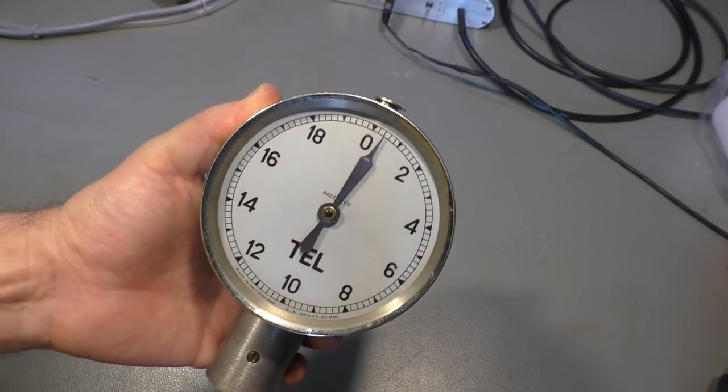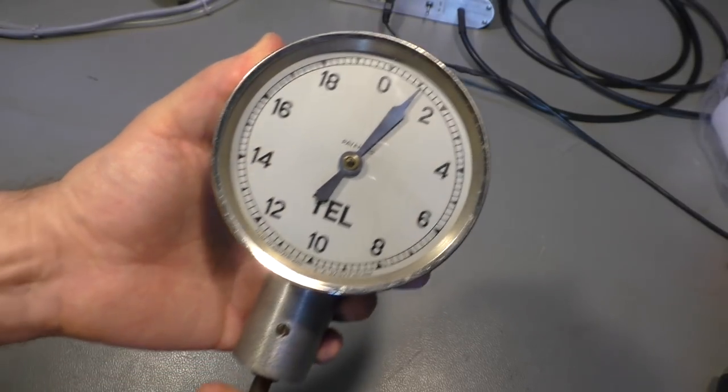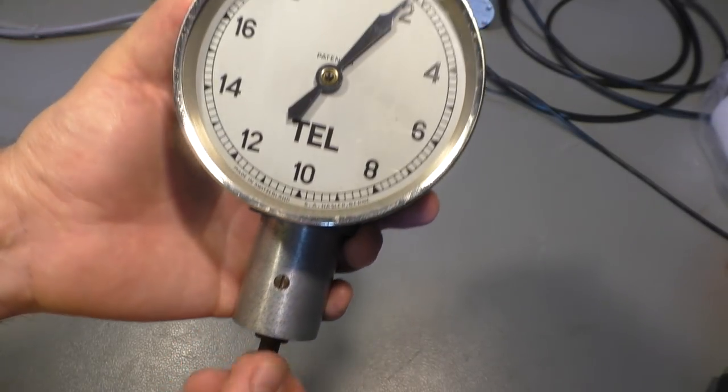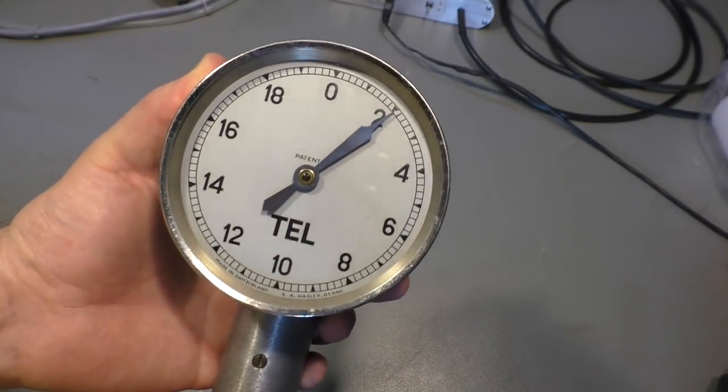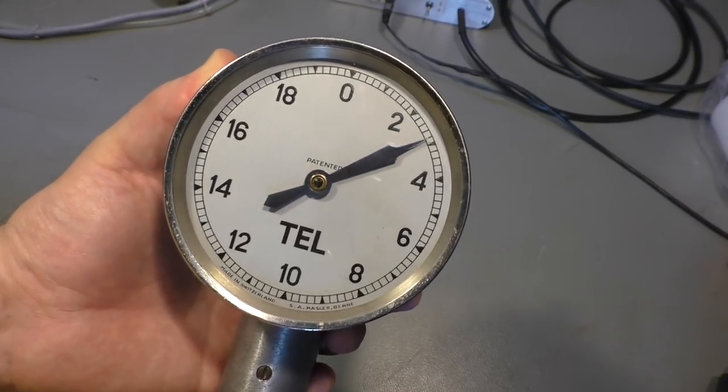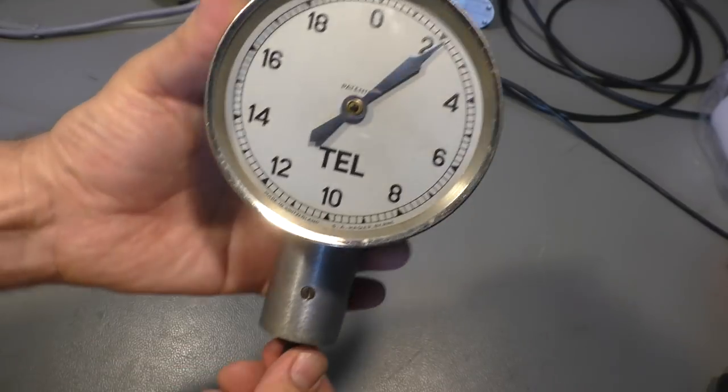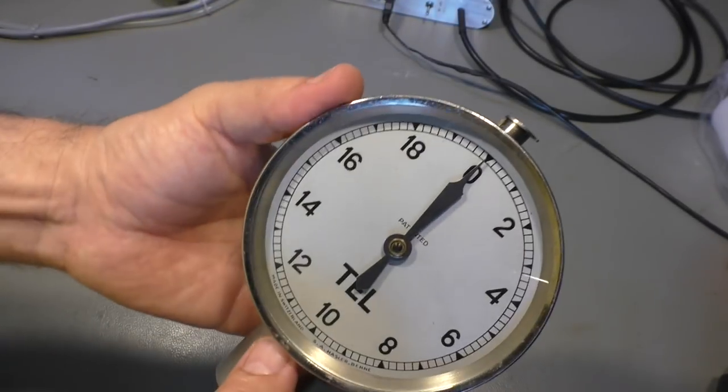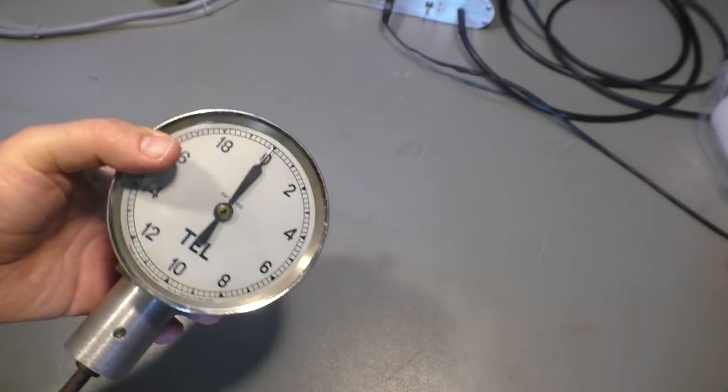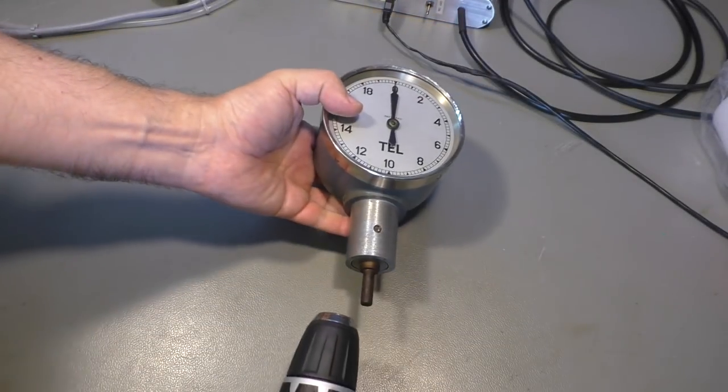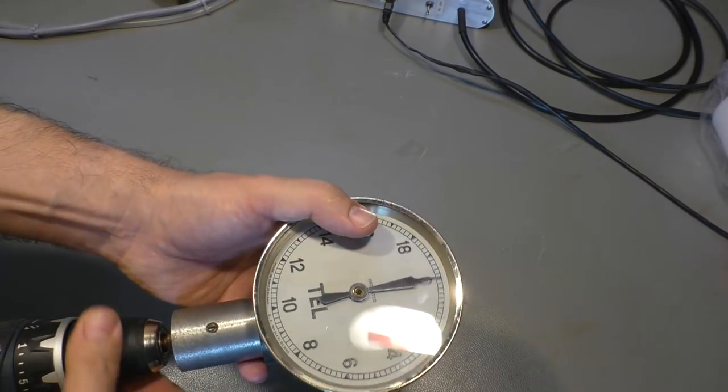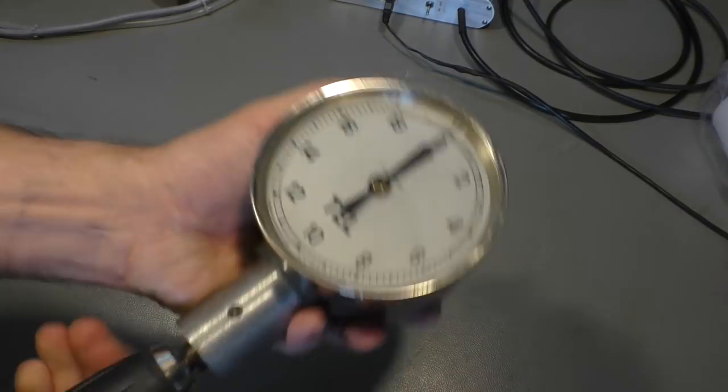So this one does not indicate speed. It's a tachometer. You can see here I'm turning the shaft here, and the faster I turn, the higher the needle gets. So of course this is, I think, 2000 RPM, one full revolution here. So let's simulate that with my cordless drill here.